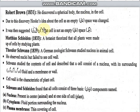Robert Brown discovered a spherical body — the nucleus. Due to this discovery, Hooke's idea about the cell as an empty space was challenged, because Hooke had said the cell is empty, but the nucleus showed it is not.